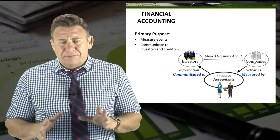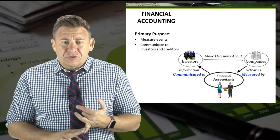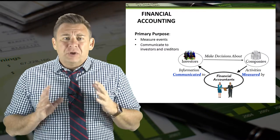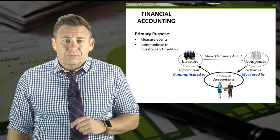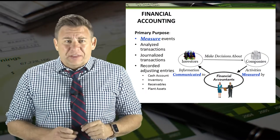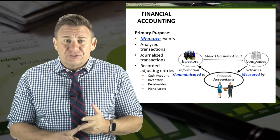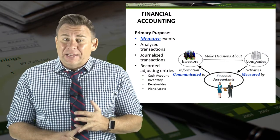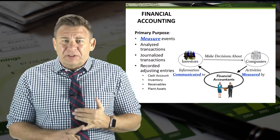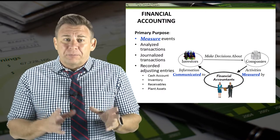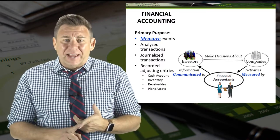In its most basic form, financial accounting is measuring transactions and communicating that information to external decision makers. We've done a lot of measuring thus far. We've learned how to analyze transactions, how to journalize transactions, how to analyze accounts and make adjustments, and specifically how to measure and report information about cash, inventory, receivables, and plant assets.